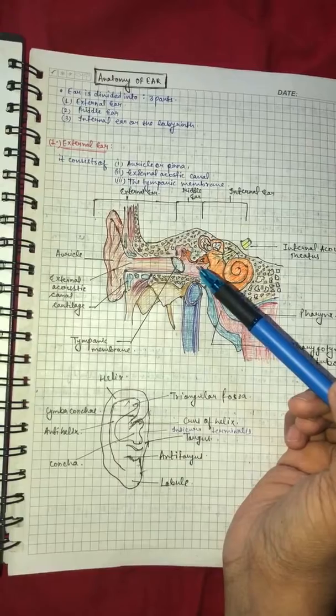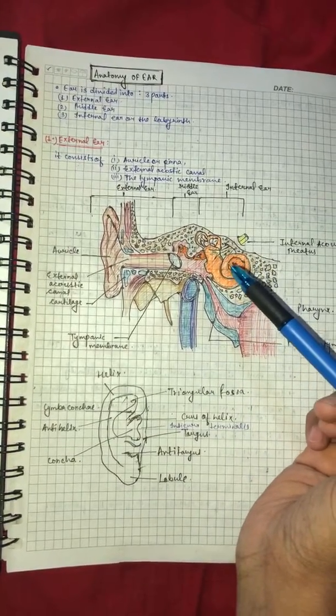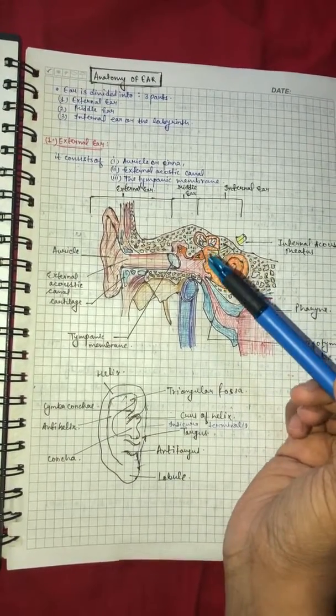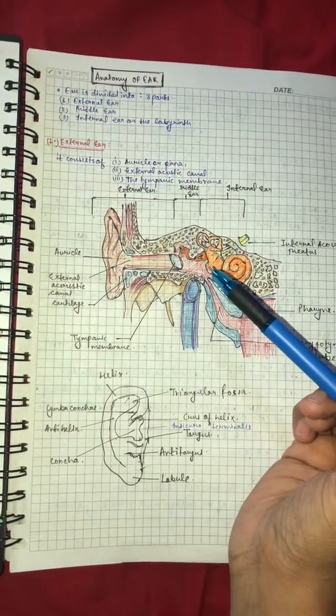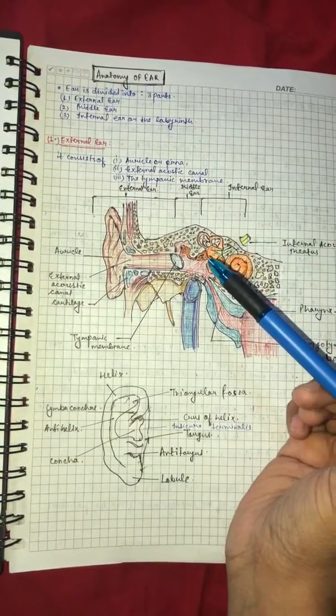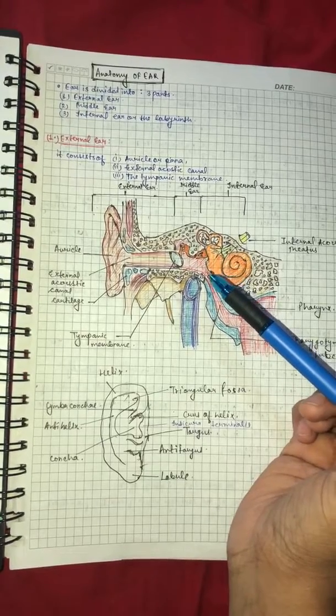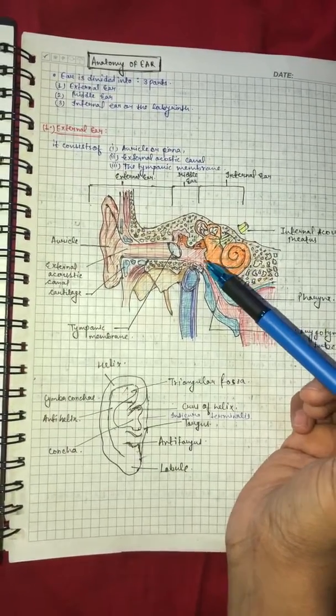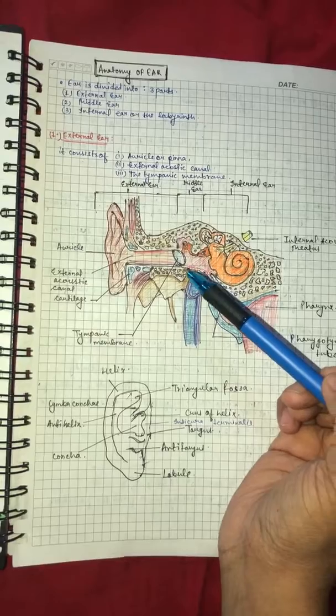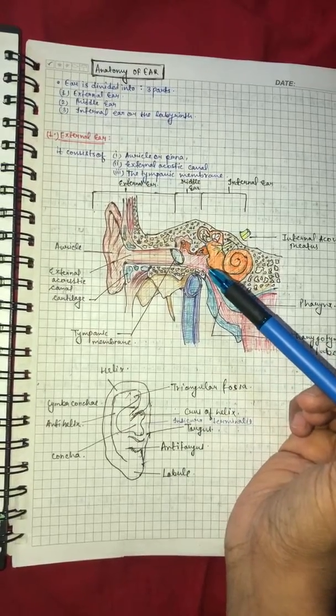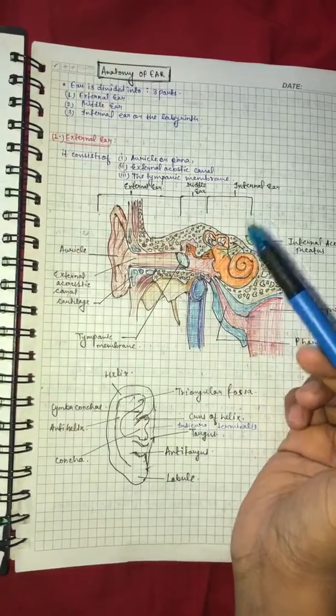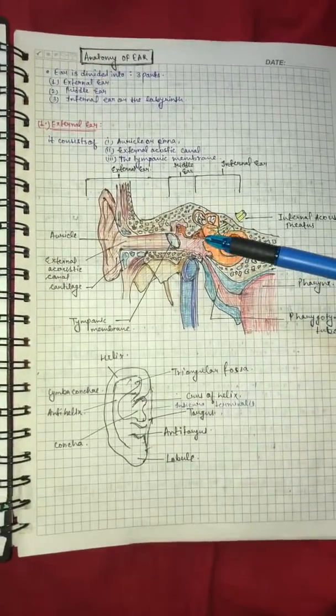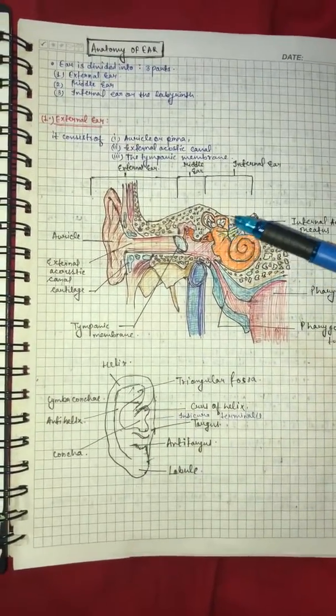Then tympanic membrane, this part you see, this structure is the internal ear. So from the tympanic membrane to the internal ear, and the other name is labyrinth. Here this is the middle ear, this cavity. As we know, middle ear is a box-like structure.